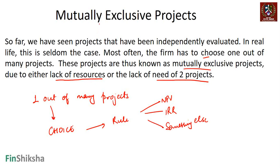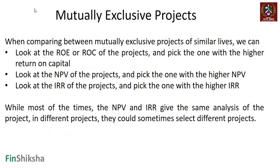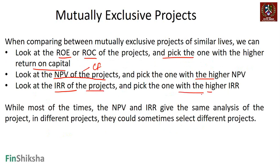When comparing mutually exclusive projects, you could look at the return on equity or return on capital and pick the one with the highest return on capital, or use accounting earnings to find whichever project has the highest accounting earnings. You could also look at the NPV of projects — which works on cash flows — and pick the one with the highest NPV, or look at the IRR and pick the one with the highest IRR.